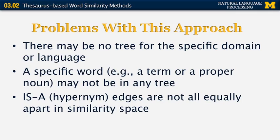A more interesting problem is that the hypernym edges — also known as is-a edges, because an elk is a deer — are not equally spaced in similarity space. Sometimes two words can be two edges apart and still be relatively similar semantically, whereas another pair of words with the same exact distance may actually be much more different than the first pair.